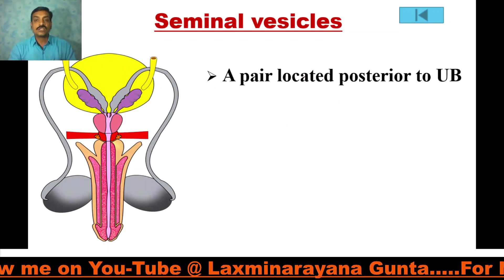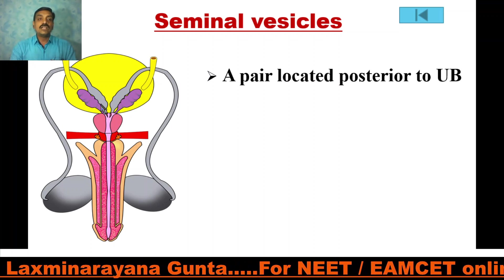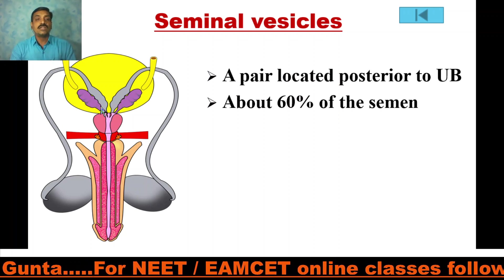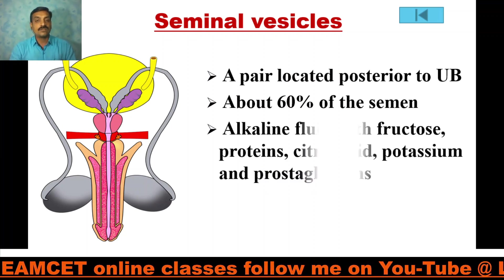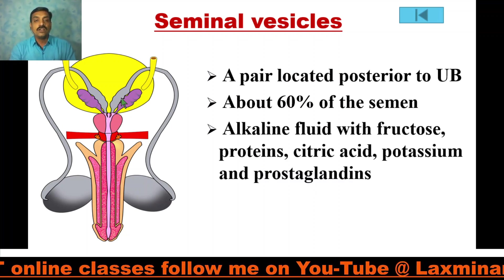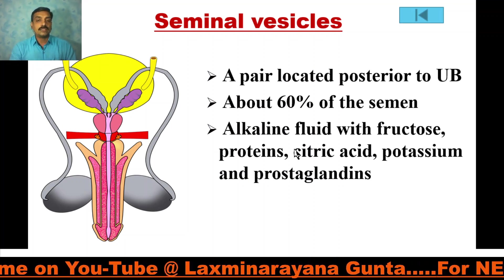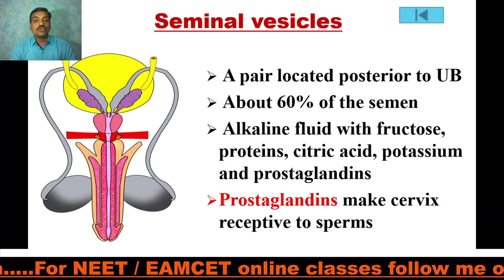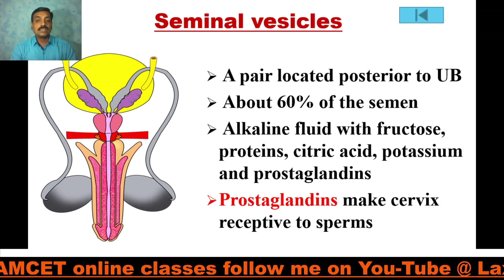Seminal vesicles are a pair of structures located posterior to the urinary bladder. Their secretions account for nearly 60 percent of the semen. It is an alkaline fluid containing fructose, proteins, citric acid, potassium, and prostaglandins. These prostaglandins make the cervix of the female receptive to sperms.